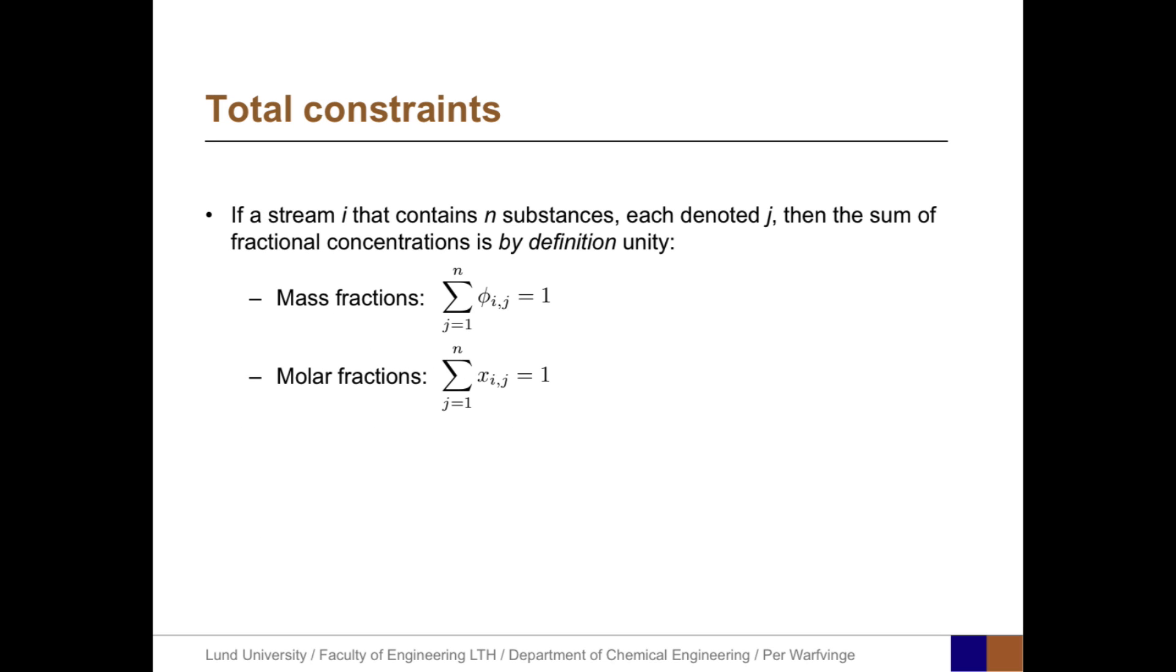The total constraint refers to what we can say about mass fractions and molar fractions. If a stream I contains N substances, each J from 1 to J, then the sum of the fractional concentrations is, by definition, unity.